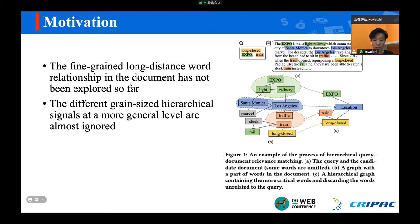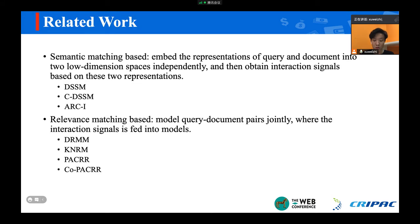Next, I will briefly review the relative work in this task. The relative work can be divided into two groups. The earlier pipeline is called semantic matching-based, where methods usually embed the representation of query and document into two low-dimensional spaces independently, and then obtain interaction signals based on these two representations. The representative work includes DSSM, CDSSM, and ARC-I.